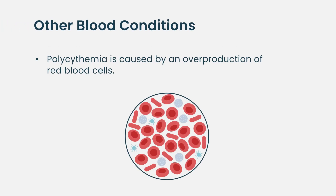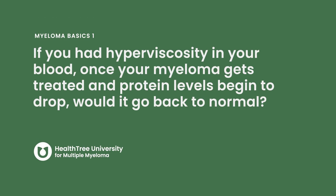One additional point: there are other situations, like a condition called polycythemia, where the cause is different. These patients have a very high concentration of red blood cells — because of an abnormal condition, their body is making more red cells than they need. That thickness of red cells affects circulation, and these patients can also present with hyperviscosity.